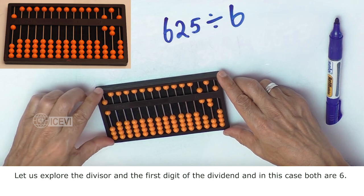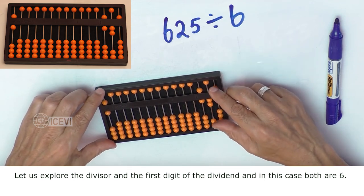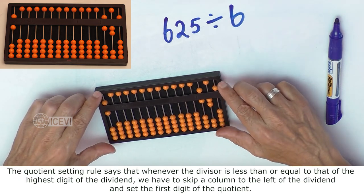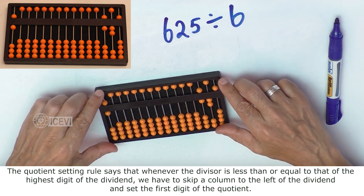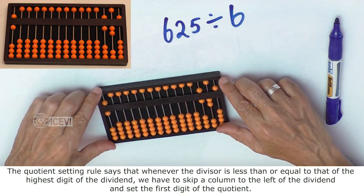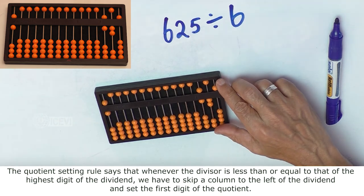Let us explore the divisor and the first digit of the dividend, and in this case both are 6. The quotient setting rule says that whenever the divisor is less than or equal to the highest digit of the dividend, we have to skip a column to the left of the dividend and set the first digit of the quotient.